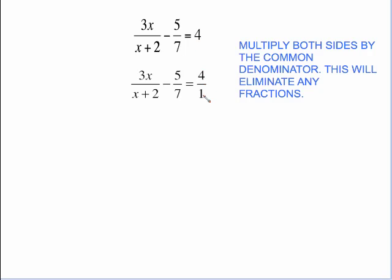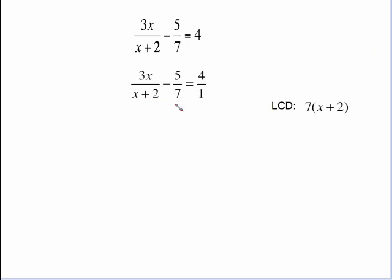On this step all I did was just write this as 4 over 1 because sometimes it makes it easier to do your canceling when this is written as 4 over 1. The common denominator is going to have to be a product of this binomial and this monomial. So the common denominator is just 7 times x plus 2. We need to multiply this side by 7 times x plus 2 and this side by 7 times x plus 2.